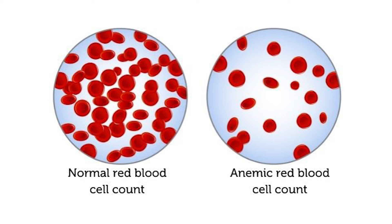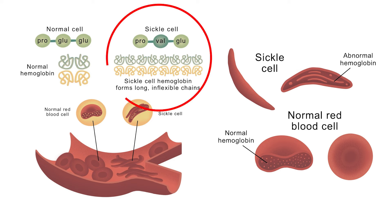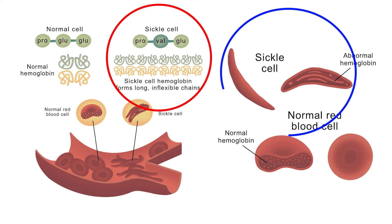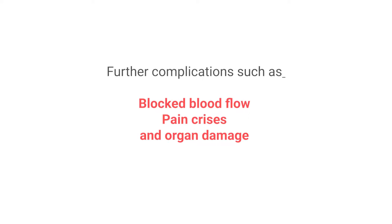Anemia can cause fatigue and less energy. The abnormal hemoglobin protein in sickle cell disease causes the red blood cells to become rigid and shaped like a sickle, hindering their ability to carry oxygen effectively. This in turn leads to further complications such as blocked blood flow, pain crises, and organ damage, all of which contribute to anemia.